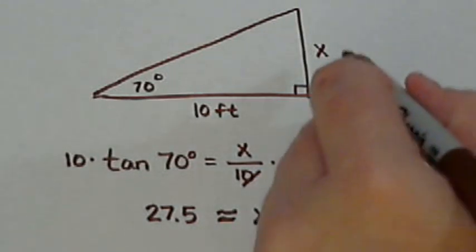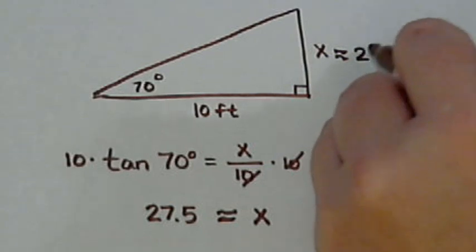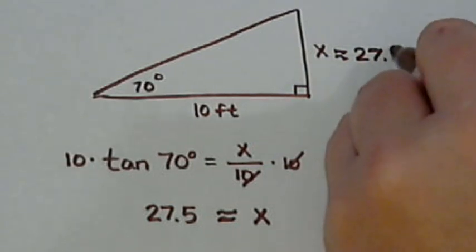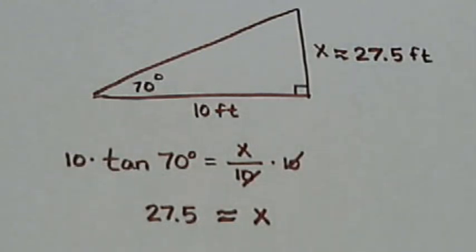But this tells us that the blood drop originated from about 25 feet, 27.5 feet, off the ground. So we'll see you next time. Thank you.